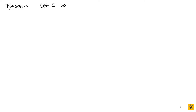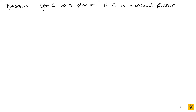Now we're going to look at a theorem which gives us some information about maximal planar graphs. Let G be a planar graph. If G is maximal planar, then the size of G is equal to three times the order of G minus six.